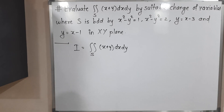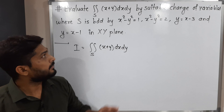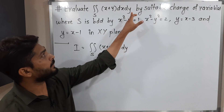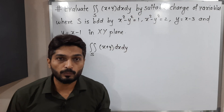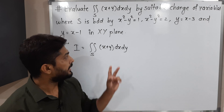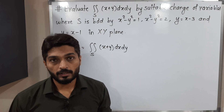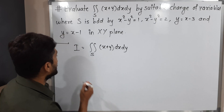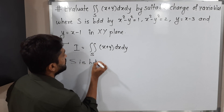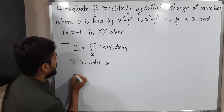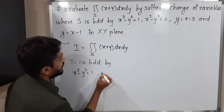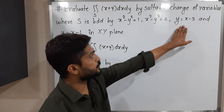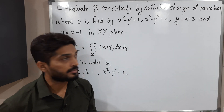In this video we are going to find the value of a double integration where the region S is bounded by four curves: x² - y² = 1, x² - y² = 2, y = x - 3, and y = x - 1.